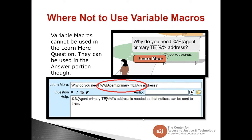Where not to use Variable Macros: Variable Macros cannot be used in the Learn More question. They can be used in the Learn More answer portion though. This is the Learn More question: 'Why do you need variable macros address?' If you put a Variable Macro in the Learn More question, this is how it will display for your end user — obviously that's not how you want it to display. You want it to display the value of that variable instead. So don't put Variable Macros in the Learn More question section. It works perfectly fine in the Learn More answer section. It's just a little A to J quirk and we're working on it, but for right now do not put Variable Macros in the Learn More question section.